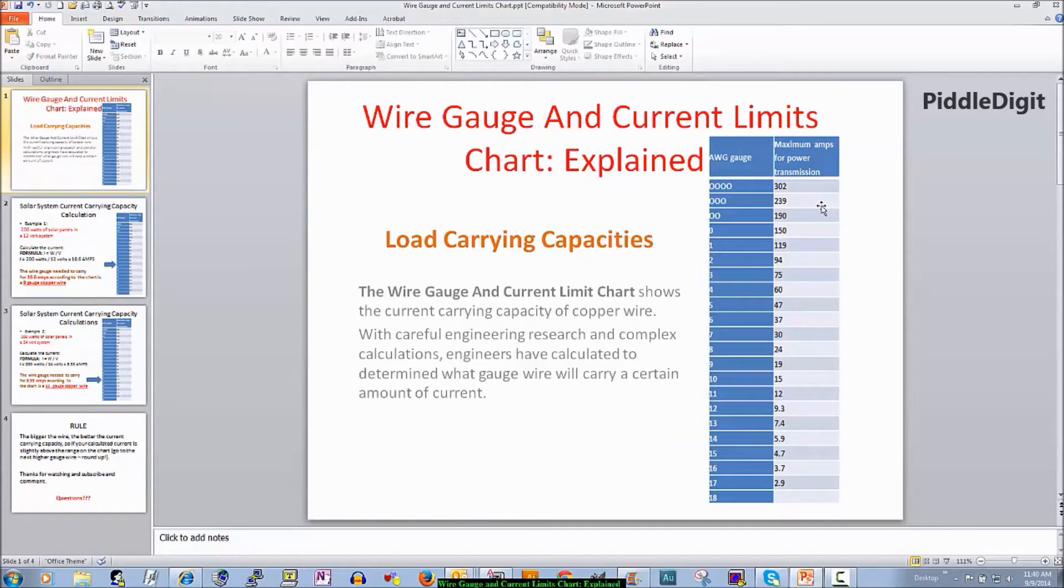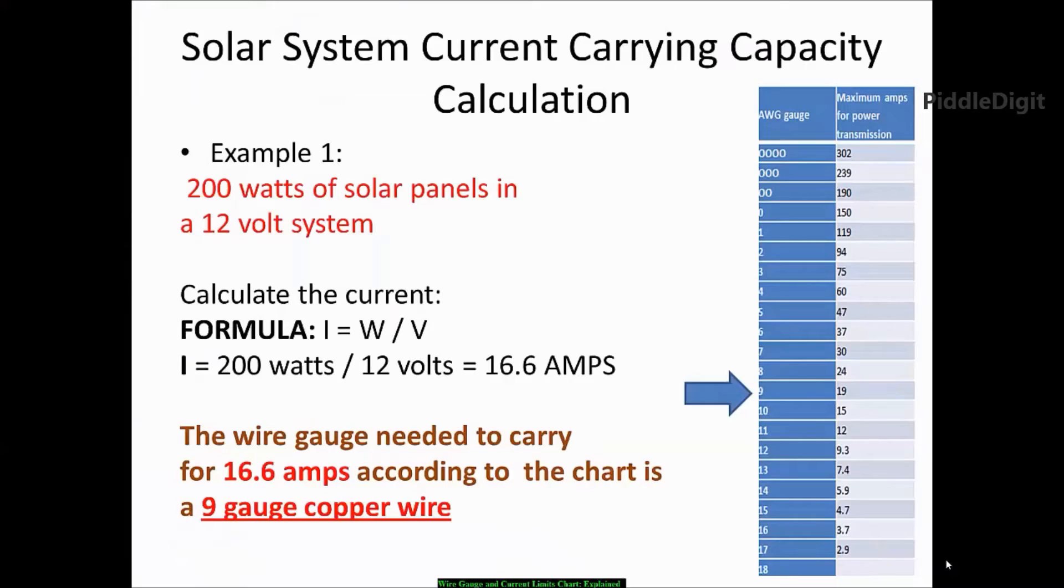So I'm going to bring back the calculation I did in my previous video where I showed you how to calculate the current of your solar system given the watts of your solar panels and the voltage. We considered two voltage systems: a 12 volt system as well as a 24 volt system. So let's just bring the 12 volt system example into our picture right here. Alright, here we go.